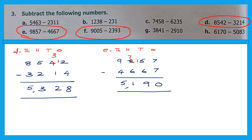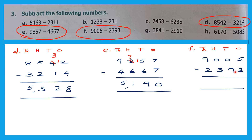Now let's go to question F. Write ones, tens, hundreds, thousands. The question is 9,005 minus 2,393. Ones: 5 minus 3 is 2. Tens: 0 minus 9 — can't do, and the hundreds is also 0, so borrow from 9 (thousands): 9 becomes 8, hundreds becomes 10, then borrow again so hundreds becomes 9 and tens becomes 10. 10 minus 9 is 1. Hundreds: 9 minus 3 is 6. Thousands: 8 minus 2 is 6. The answer is 6,612.